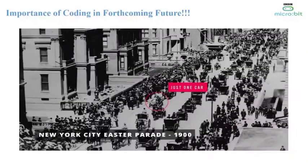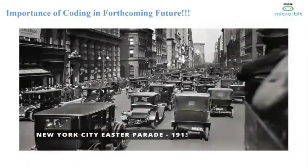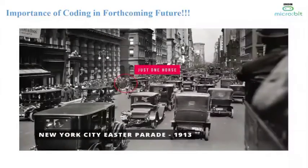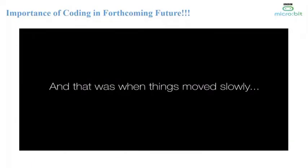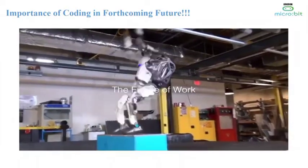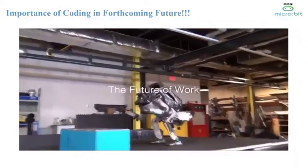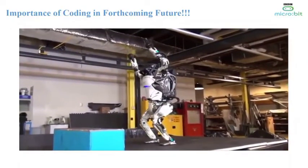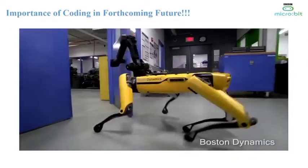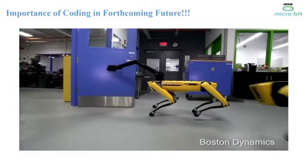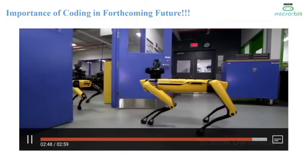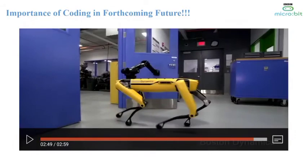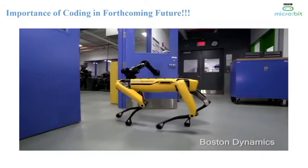In 1900, there was only one car on the New York City road, and in 1913 — that is after 13 years — only one horse remained on the same road. These changes occurred slowly because there was less awareness and fewer technologies. Our future will change in a rapid, drastic, and exponential manner. So it's our turn and responsibility to keep our children equipped for this unknown and out-of-the-blue future.